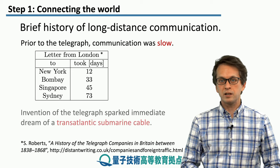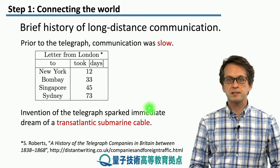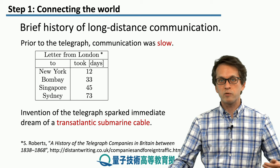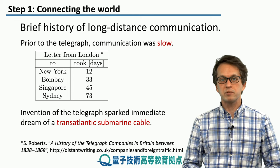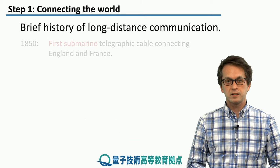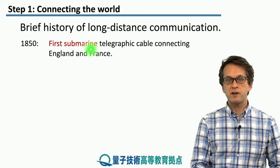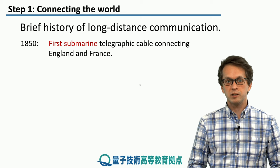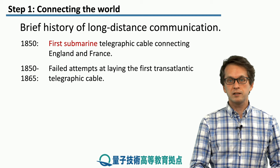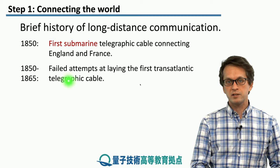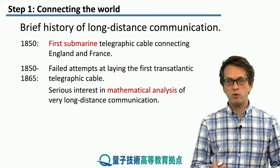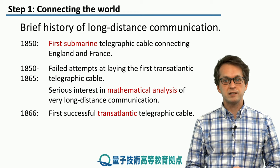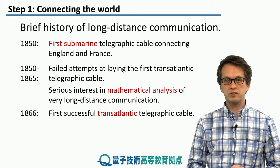The telegraph immediately sparked the dream of a transatlantic submarine cable, because people realized that if they could use the telegraph to communicate over land so quickly, they should be able to connect continents with submarine cables as well. In 1850, the very first submarine telegraphic cable was laid, connecting England and France. That worked fine, so immediately people wanted to lay one across the Atlantic Ocean. For the next 15 years there were many failed attempts, but this sparked a real focused mathematical analysis of very long distance communication. Finally, in 1866, the first successful transatlantic telegraphic cable was laid and used.